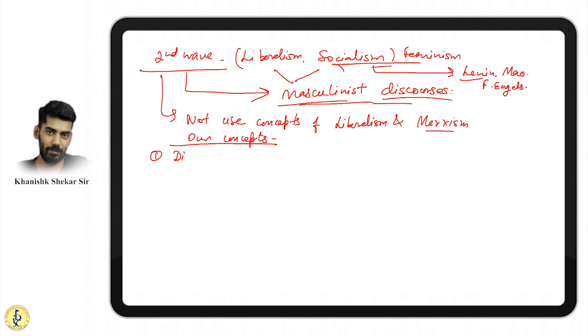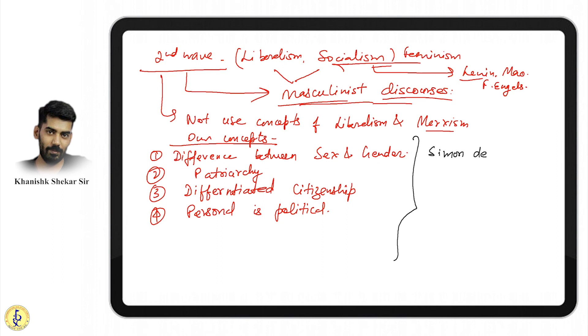Liberal and Marxist or socialist approaches won't achieve what we want. Radical feminism is the real essence. They developed their own concepts based on women's situation: distinguishing between sex and gender, patriarchy, differentiated citizenship, and personal is political. Other second wave authors include Simone de Beauvoir with The Second Sex, Betty Friedan's Feminine Mystique, Kate Millett's Sexual Politics, and Suzanne Brownmiller's Against Our Will.